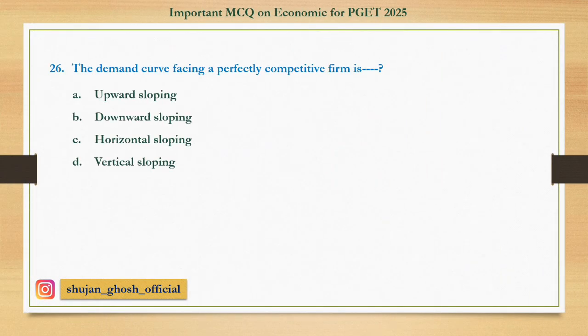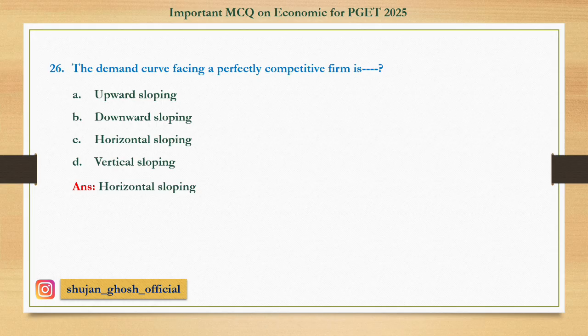Question number twenty-six: The demand curve facing a perfectly competitive firm is — option A: upward sloping; B: downward sloping; C: horizontal; D: vertical. Answer: horizontal.